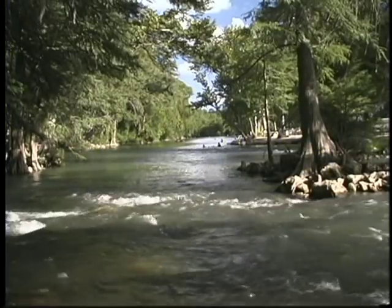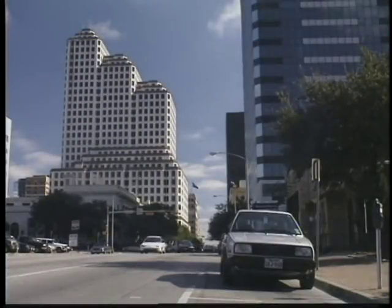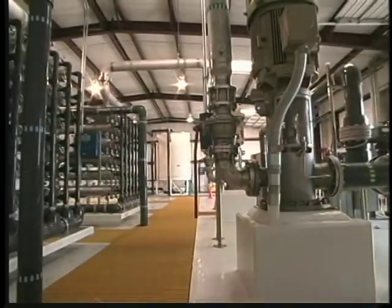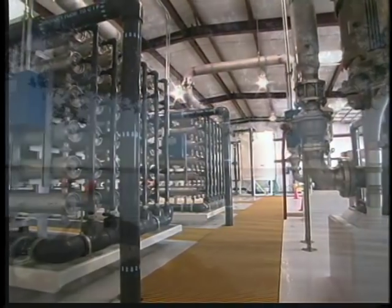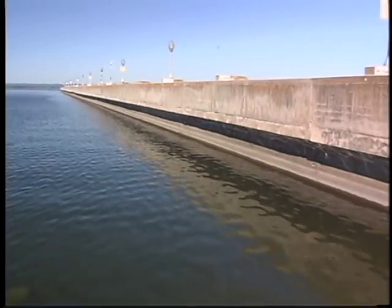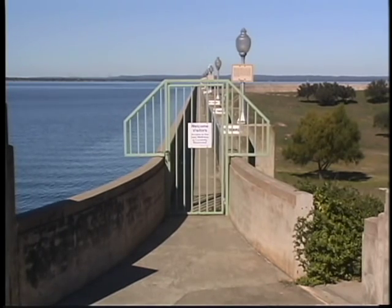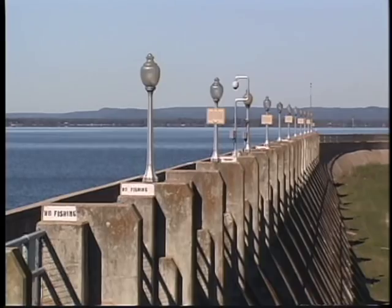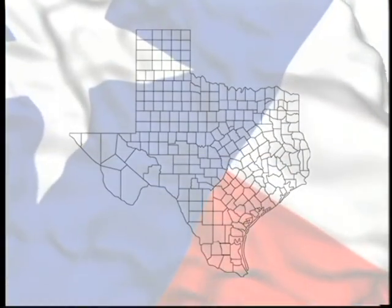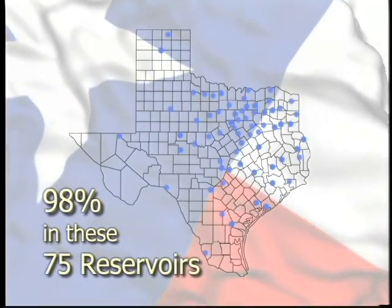Surface water flowing in natural rivers and streams is a vital resource for all regions of Texas, but it's especially important for cities and urban areas. Nearly two-thirds of all Texas surface water is used by cities and industries. Because river and stream flow vary throughout the state, reservoirs have been built to provide a more reliable and dependable source of water. All told, the Texas river system has 5,700 reservoirs, of which 210 are major reservoirs holding more than 5,000 acre feet of water. However, 98 percent of reservoir water is held in only 75 of the state's major reservoirs.